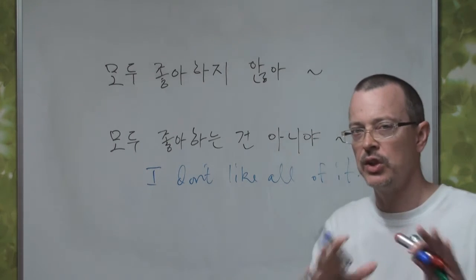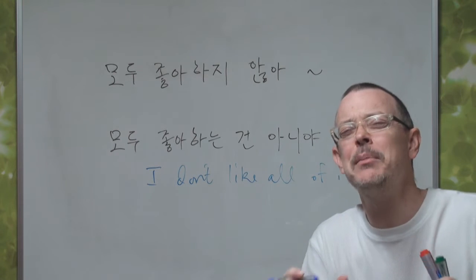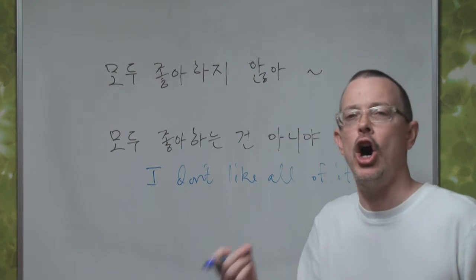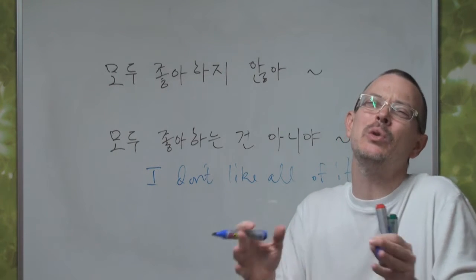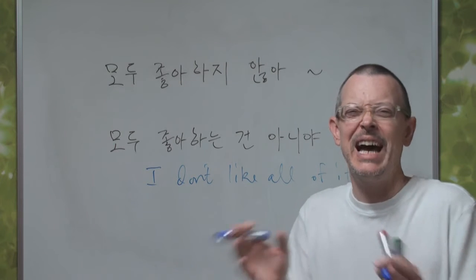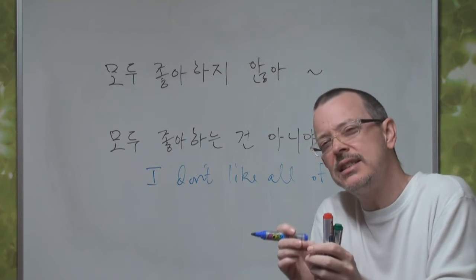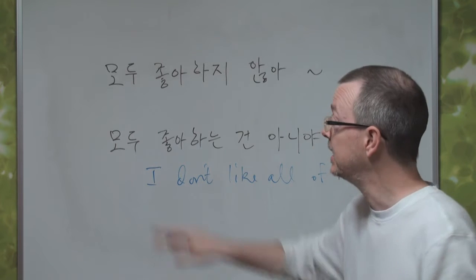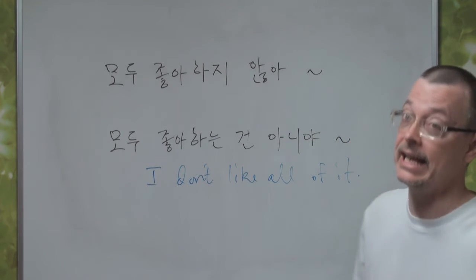So the sentence would be: 'I like some of it, but not all of it.' Or, 'I don't like everything.' 'I don't like all of it' — just some of it. Do you understand? That is 모두 좋아하는 건 아니에요.